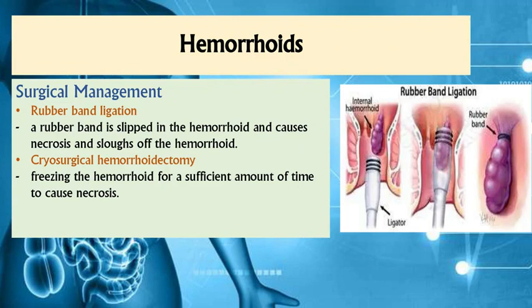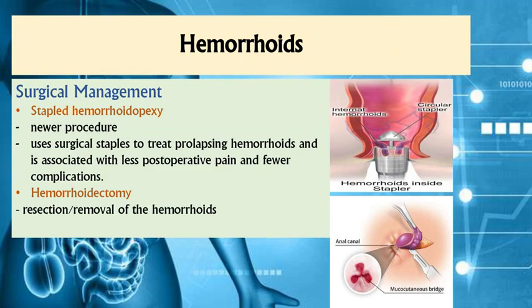Surgical management options include: rubber band ligation, where a rubber band is slipped onto the hemorrhoid to cause necrosis and allow removal of necrotic tissue; cryosurgical hemorrhoidectomy, which freezes the hemorrhoids to cause necrosis for removal; stapled hemorrhoidopexy, a newer procedure using surgical staples to treat prolapsing hemorrhoids by controlling growth rather than removing them; and hemorrhoidectomy, a surgery to completely remove the hemorrhoids.